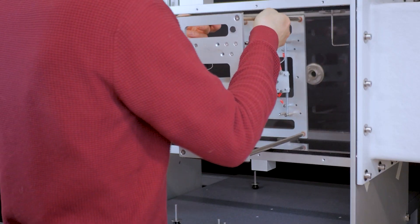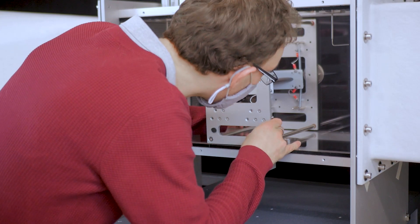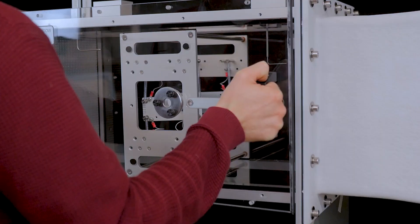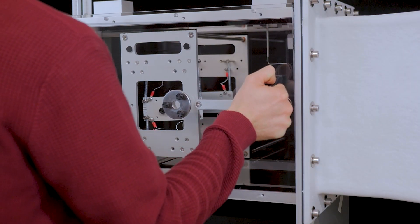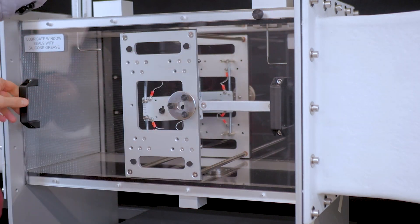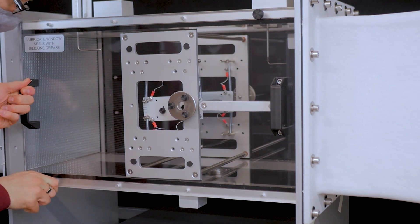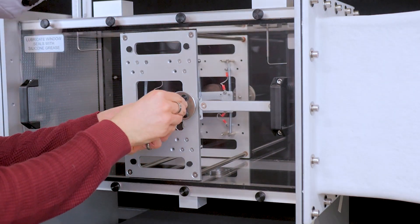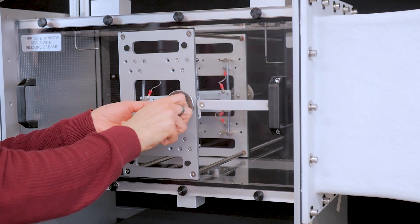To attach this to the working section of the AF1300 subsonic wind tunnel, there are two mounting rings and fasteners that you can see here. Peter is removing the side window of the working section and carefully placing it inside, attaching it with the fixings provided.